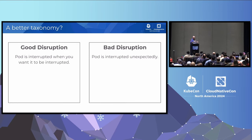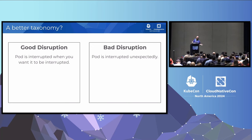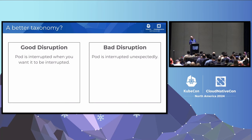That's categorizing disruption into voluntary and involuntary, which has to do with how the Kubernetes machinery reacts to a particular disruptor. We can also talk about whether this is good disruption or bad disruption. Anything where the pod is interrupted when you want it to be is good disruption. Bad disruption is anytime the pod is interrupted unexpectedly by your own definition.